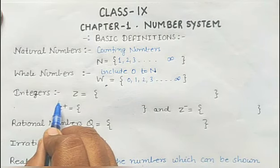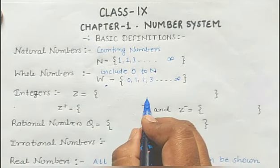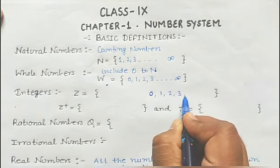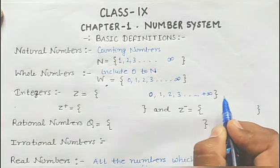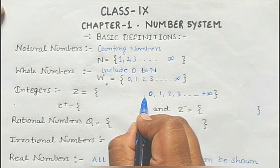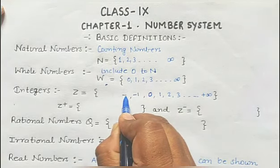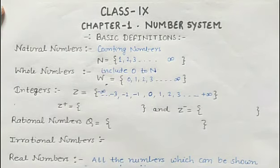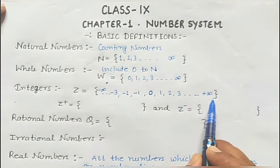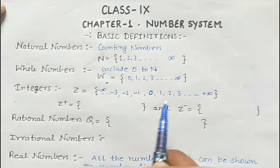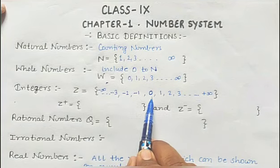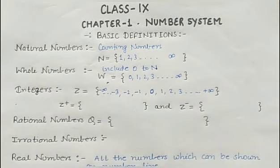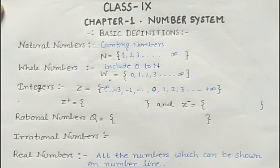Now, what are integers? The collection of integers includes 0, natural numbers 1, 2, 3 and so on till positive infinity, and the negatives of natural numbers: minus 1, minus 2, minus 3 and so on till negative infinity. If the collection includes natural numbers with positive signs, with negative signs, together with 0, then this collection is known as integers.